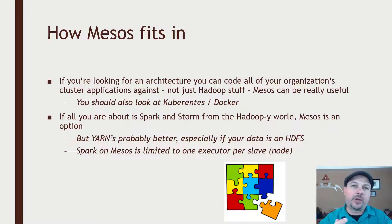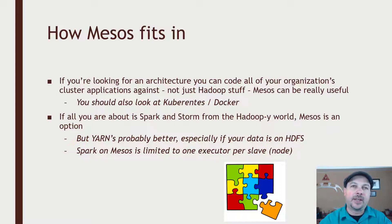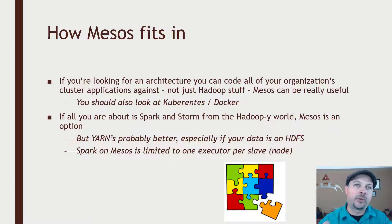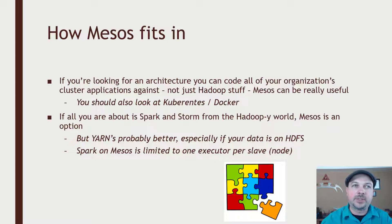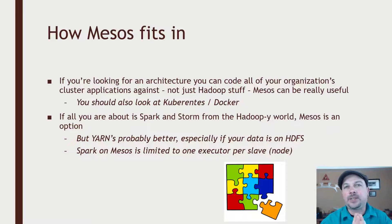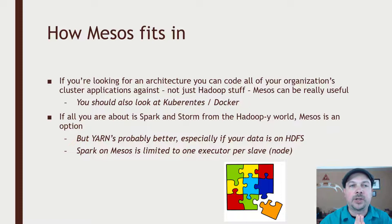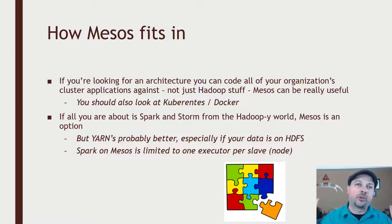So how does this all fit into what you're actually building? If you're looking for an architecture that you can code all of your applications against — not just Hadoop stuff but everything else — Mesos might be worth looking at. If you're at a really large organization that has a lot of distributed applications, some analytical in nature like Hadoop and some not, Mesos might be worth looking at. But you should also look at alternatives like Kubernetes and Docker containers, which are a very hot alternative these days for managing lots of containers across a larger cluster.